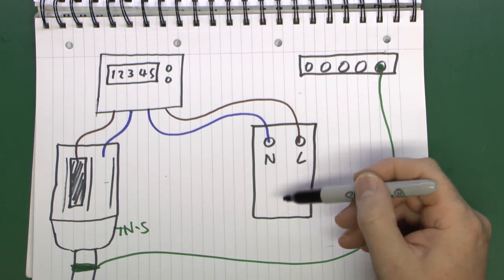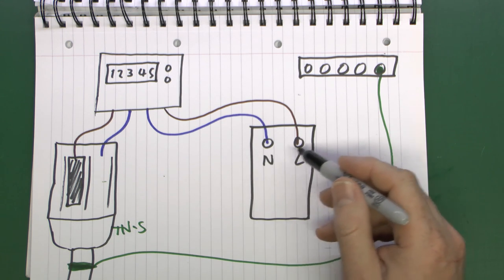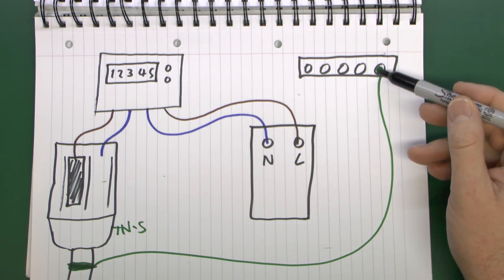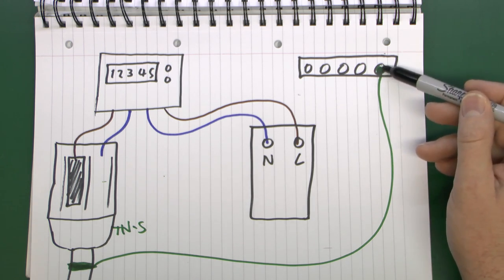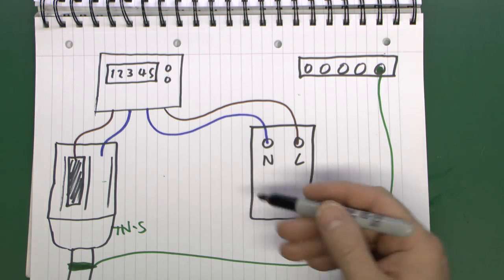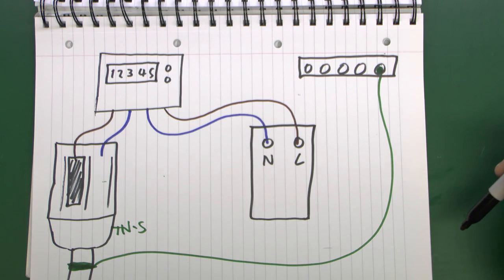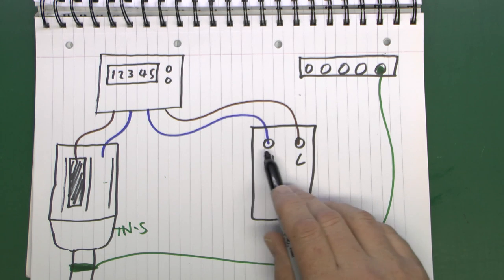Now before actually switching this isolator on here and energizing the installation, we need to make sure that the neutral and line are in the correct places and also that the main earth is actually connected. You would do a continuity test here between the earthing bar and the actual incoming point where the earth is connected. That's just comparing the continuity of that, it's a fairly simple thing. And then to check these two are connected correctly.